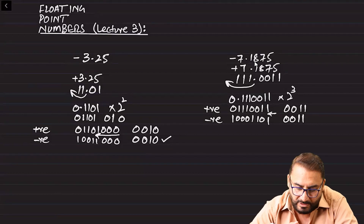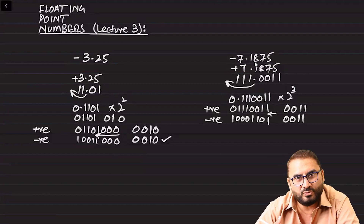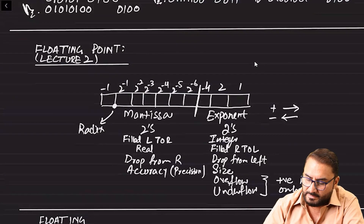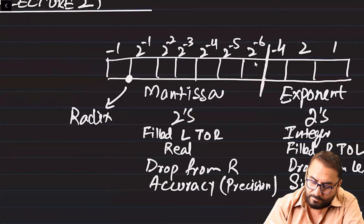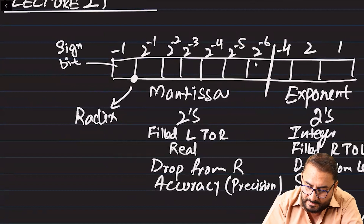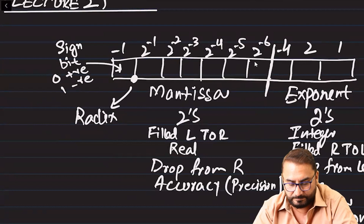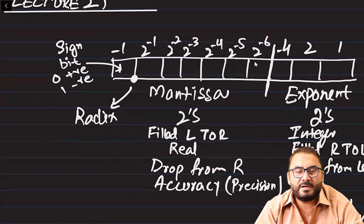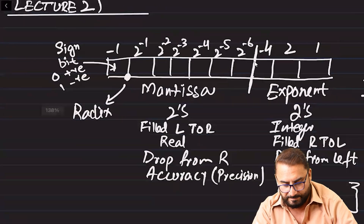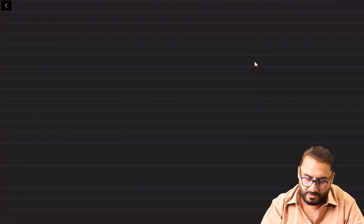Now we have learned denary to binary — both positive and negative. Now for binary to denary, another thing we have to observe is the most significant bit in the mantissa, which is called the sign bit. If it is zero it means it is a positive number; if it is one it means it is a negative number. Since the sign bit has a minus one in it, putting zero cancels it out making the whole number positive, while keeping it one means the number is negative.